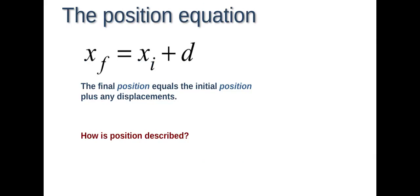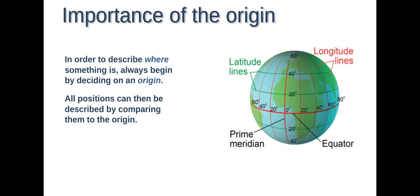So again, back to the position equation. The final position, which is XF, equals the initial position plus any of your displacements. In order to determine your movement or your final position, you have to have something called an origin. An origin is where everything starts. It's a fixed reference point that you use. Now traditionally, an origin when you're using an XY plane is going to be 00 because it's easier to work with. But that's not always the case.